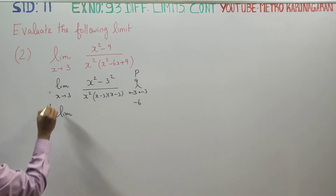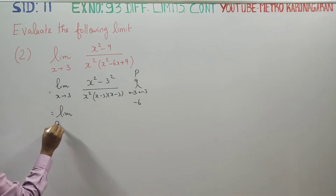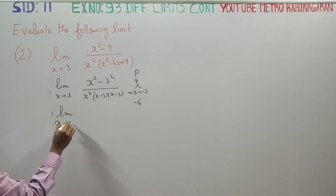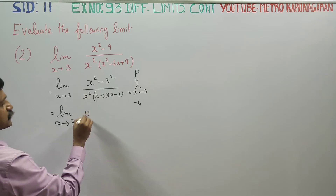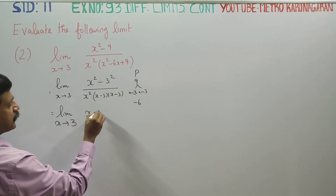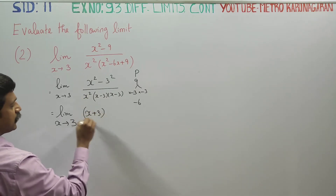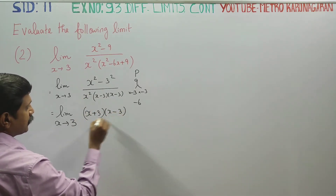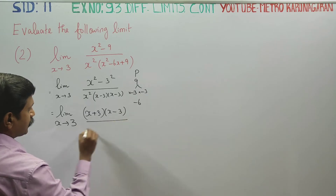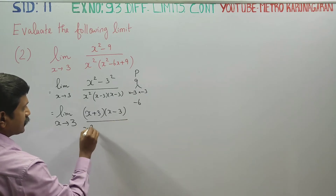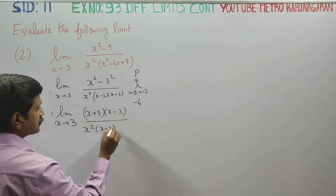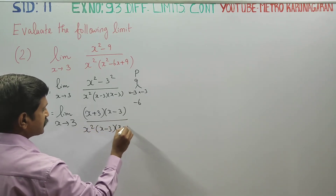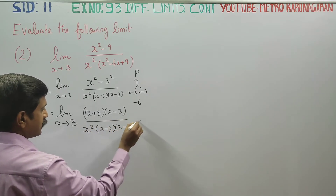Limit x turns to 3. a squared minus b squared becomes a plus b into a minus b, divided by x squared into x minus 3 into x minus 3.